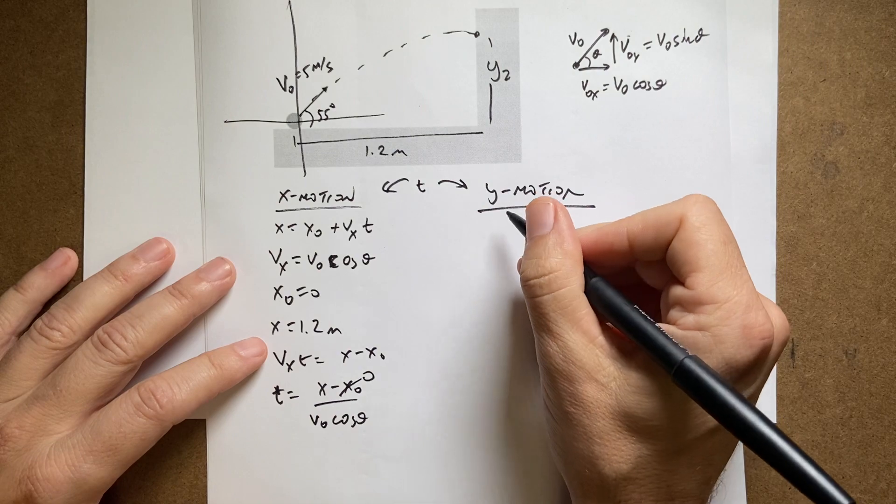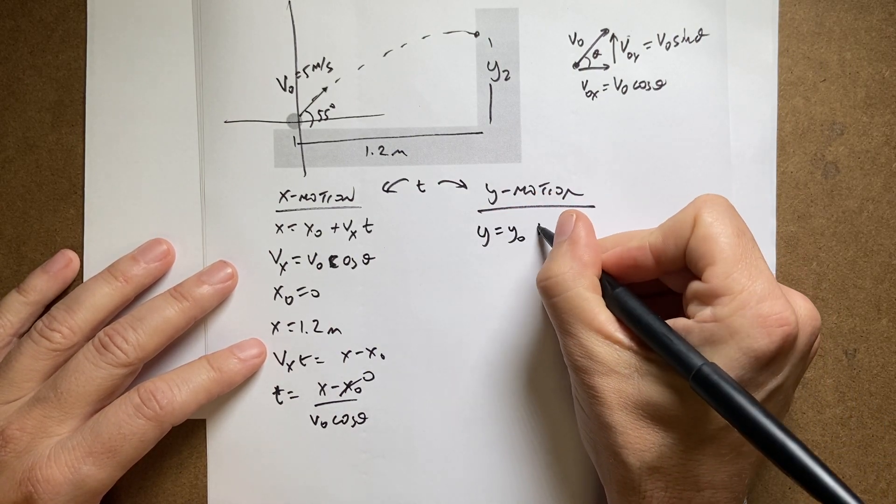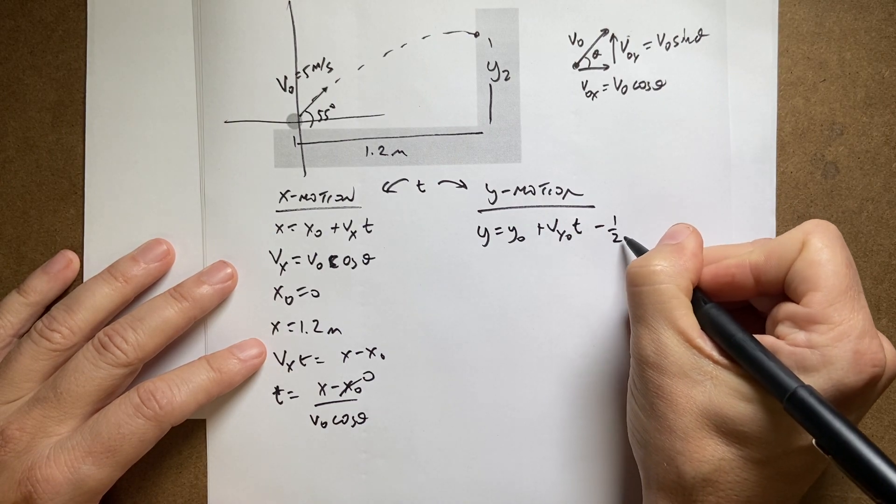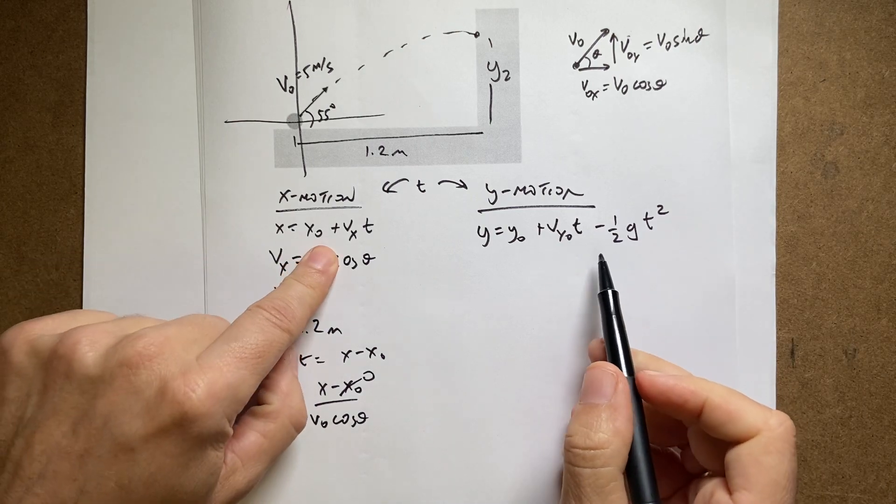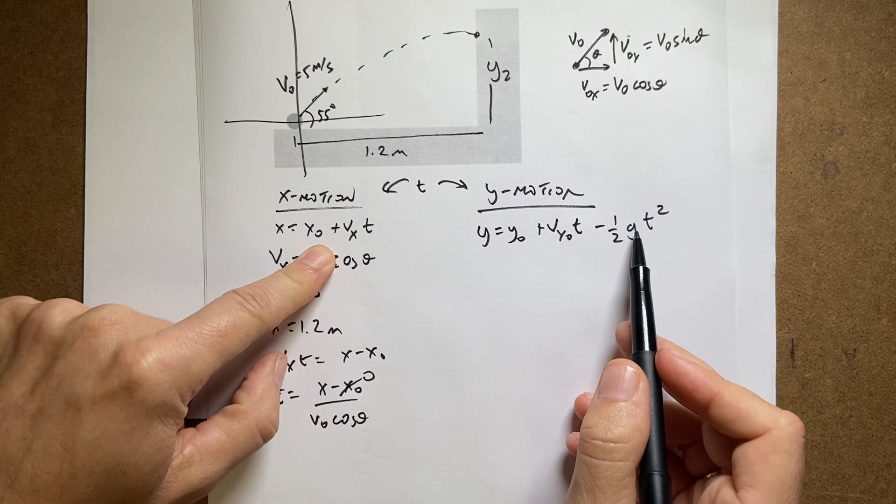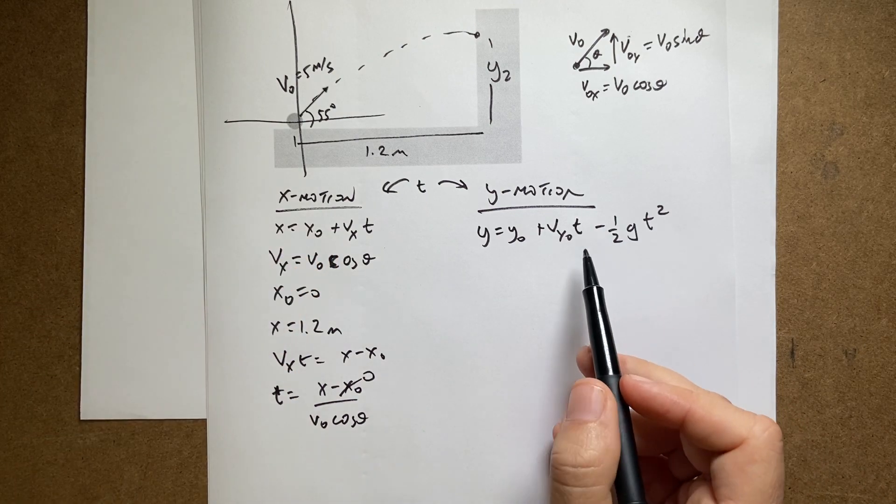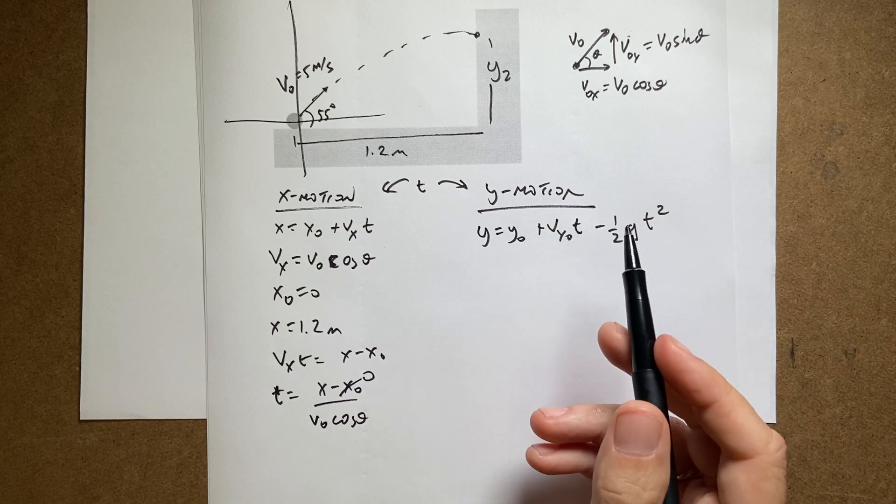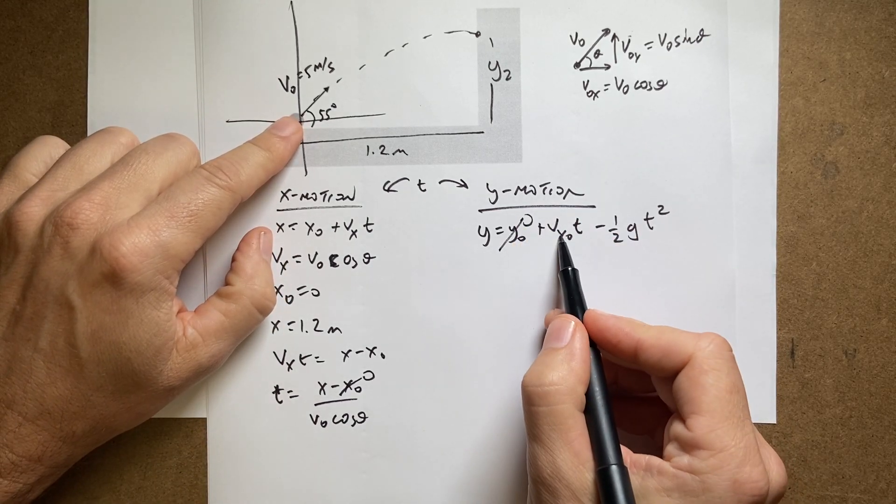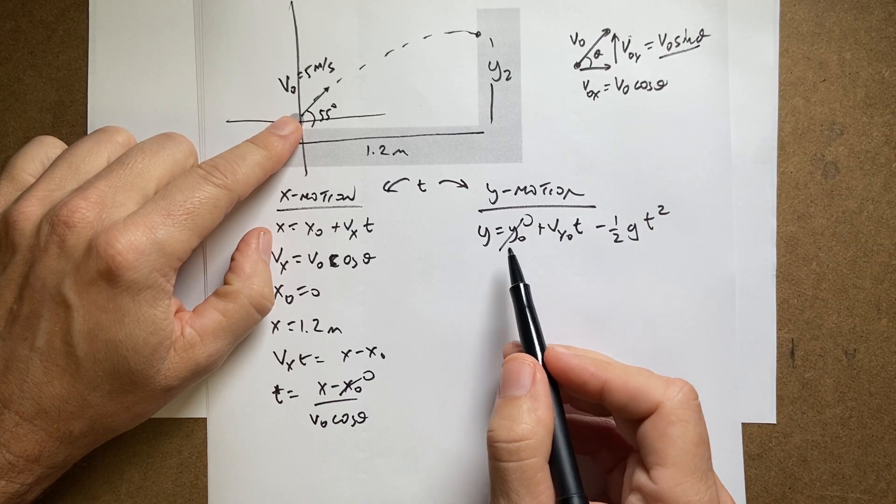Now in the Y motion, I'm going to get this equation. Y equals Y0 plus VY0T minus 1 half GT squared. So the key difference here is that there is a vertical acceleration of negative 9.8, which is G. So I have this extra term in there. Okay. So I want, I know the initial Y is 0. I know the initial Y0 is that. And I know, I want to find the Y at that time.